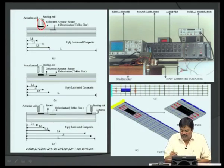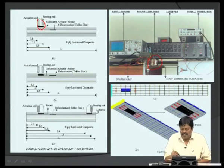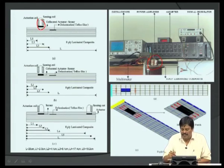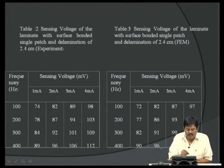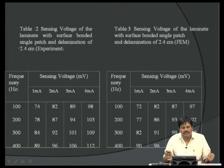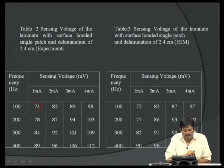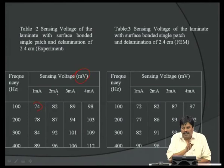The experimental setup showed the horseshoe magnet arrangement with two coils on an 8-ply unidirectional laminate. For a 2.4 cm delamination on a 20 cm long beam, a sensing voltage on the order of millivolts was detected, easily captured by the measurement devices. Good correlation was achieved between experimental and theoretical results, confirming the methodology.